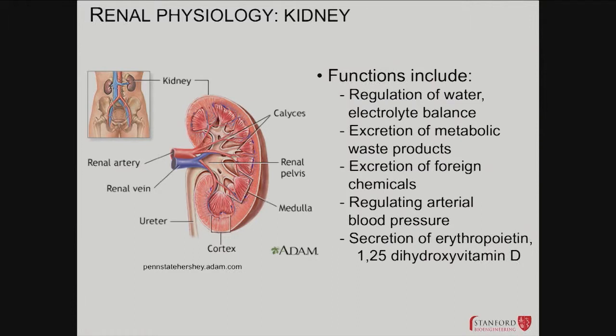This is what the gross structure looks like. It's got a renal artery coming in, renal vein going out. It's got what's called a cortex — a rim of tissue where a lot of the filtration takes place. And then it's got an inner part called the medulla, which is where the urine is formed and collected, concentrated and sent out through the ureter, which goes down to the urinary bladder.